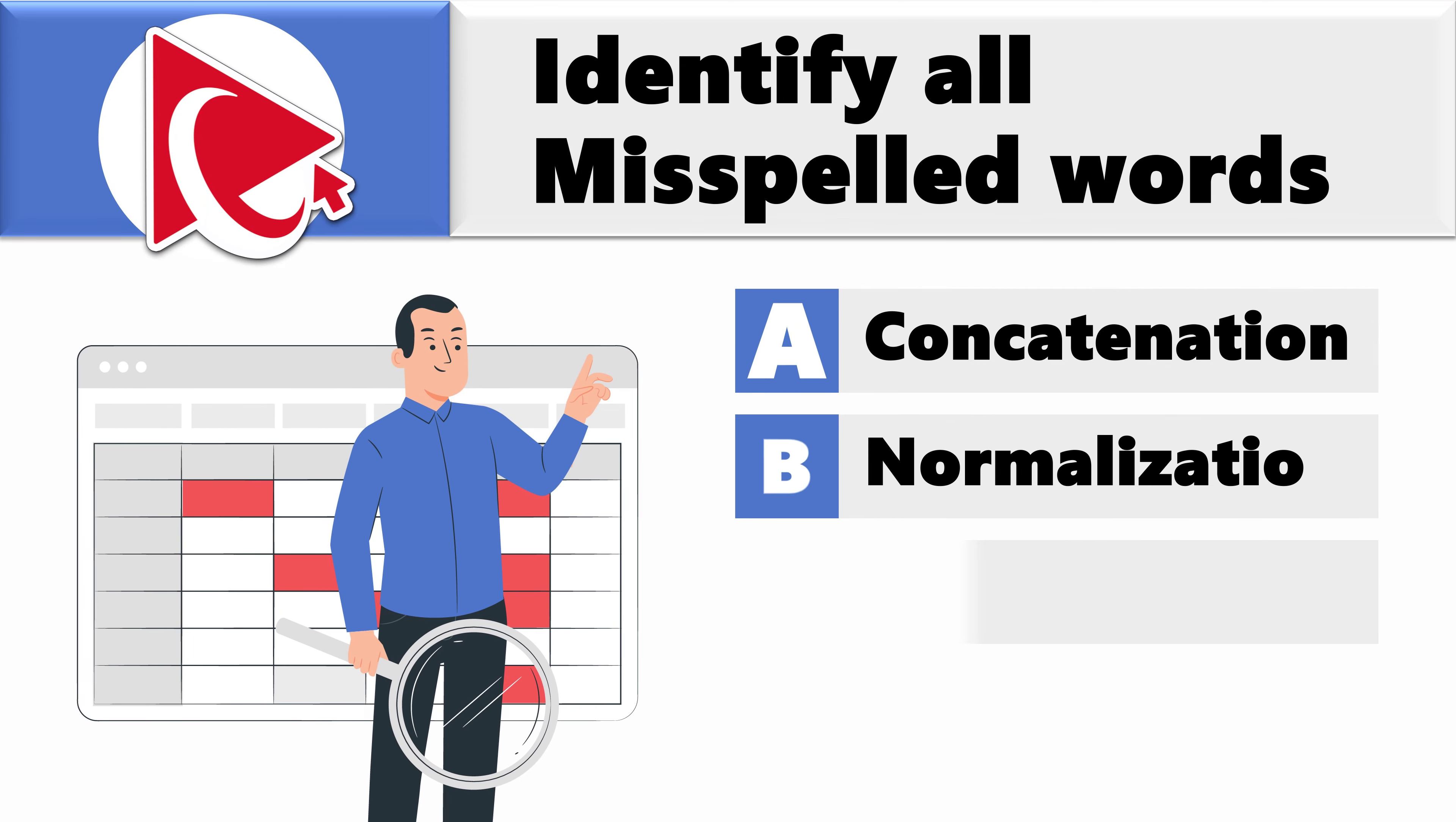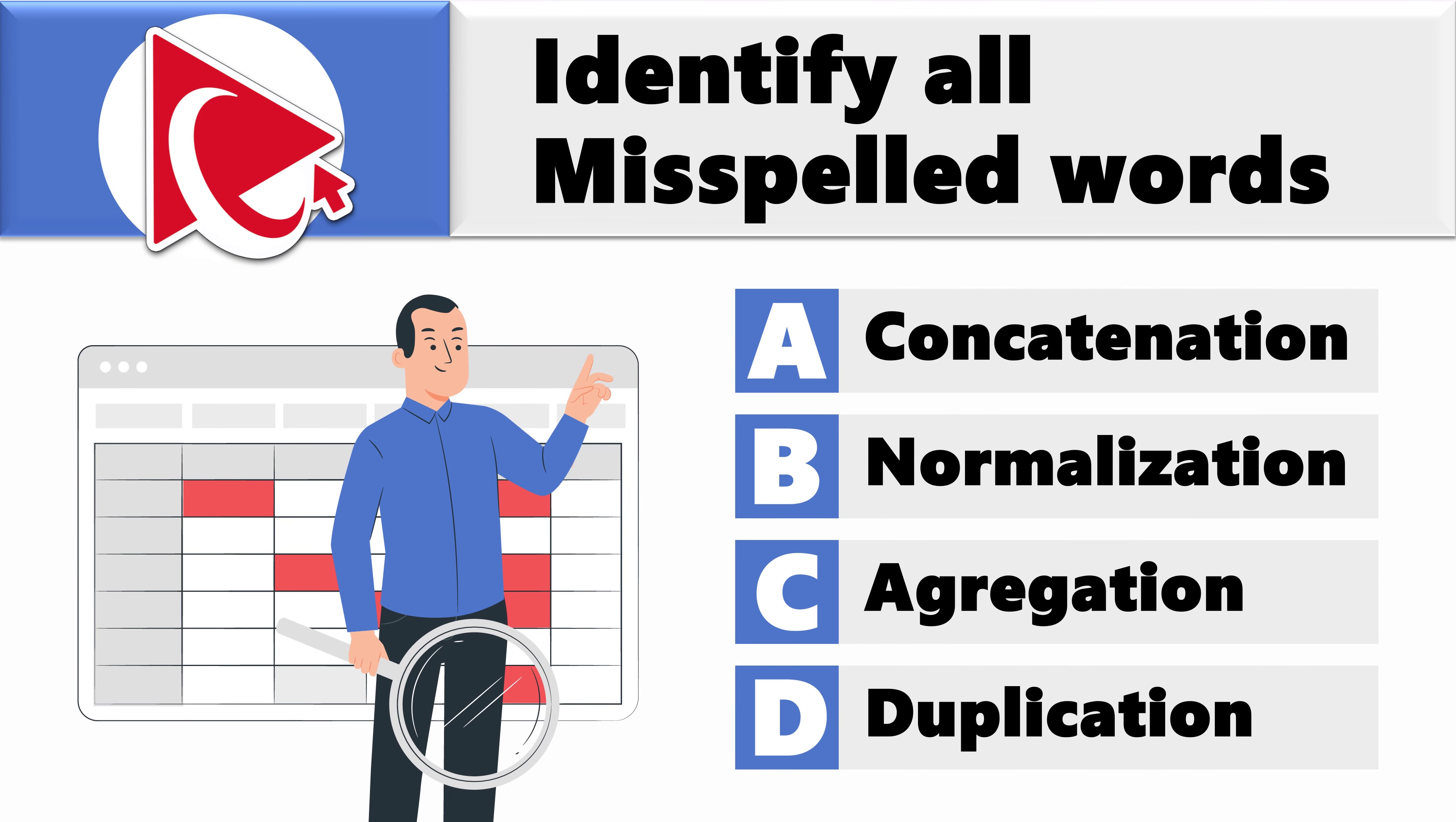You're presented with four words, and you need to determine the one that is misspelled. The words are choice A: concatenation, choice B: normalization, choice C: aggregation, and last but not least, choice D: duplication.